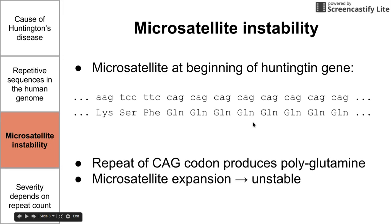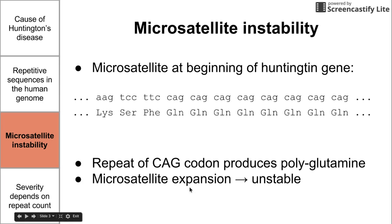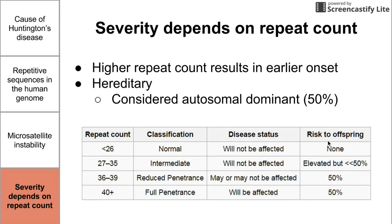It's also possible for the polymerase to slip forward and make the microsatellite smaller, though that is less likely and occurs less frequently in the cell. So microsatellite expansion is really the unstable process that occurs and causes Huntington's disease.